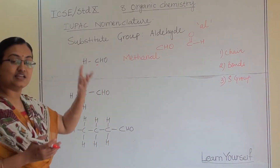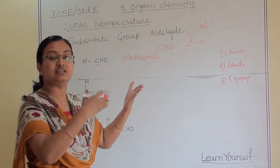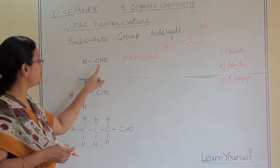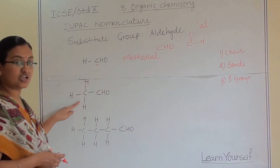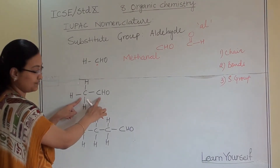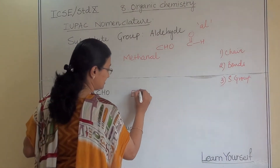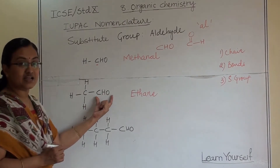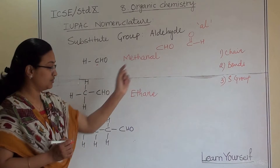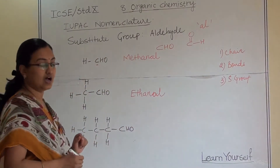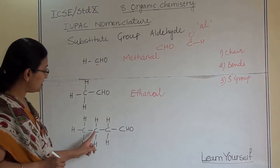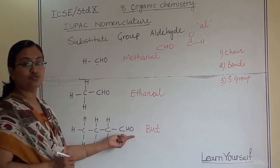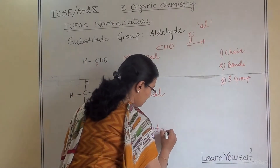Since the CHO group already contains one carbon, that carbon is counted as the first member. So the aldehyde series is: methanal, ethanal, propanal, butanal, and so on. For a structure with two carbon atoms — one CH₃ and one CHO group — it is ethanal. For a structure with four carbon atoms total including the CHO carbon, it is butanal.